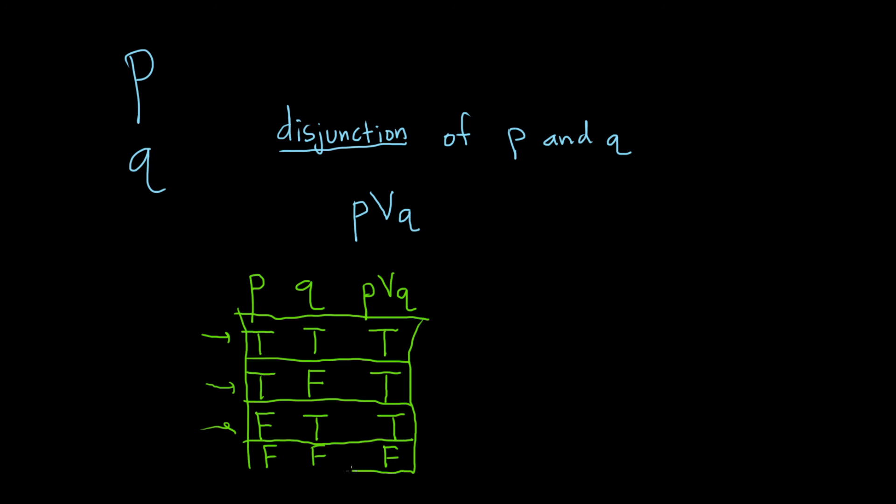So p or q is true when at least one of p and q is false. So again, it's true if p is true, if q is true, or if they're both true, then this entire statement is true. The only time it's false is when they're both false. I hope this video has been helpful.